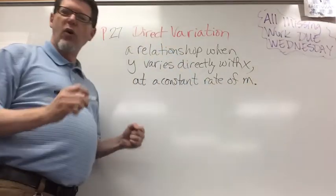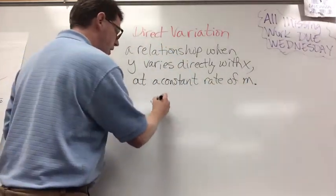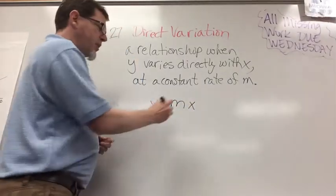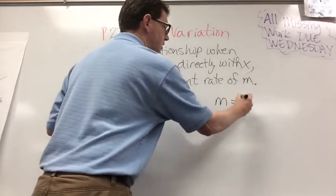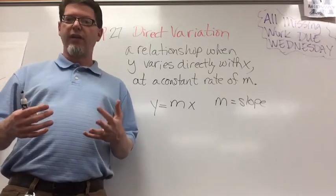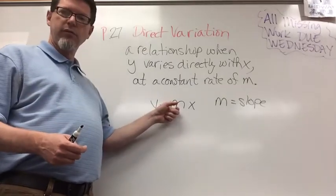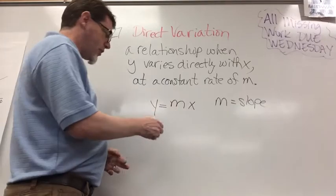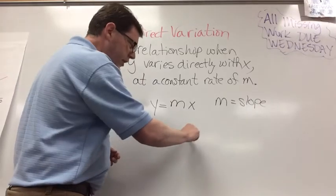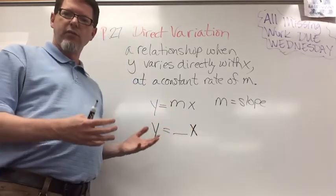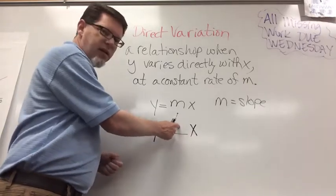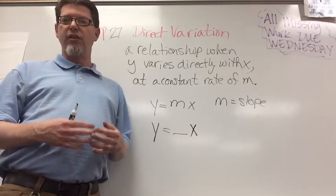That's a whole bunch of words to say that y equals m times x and we know that m is still our slope. So all we're really doing with direct variation is finding our slope and plugging it into an equation where it's always going to be y equals whatever m is times x. That's all. y equals m times x. We find the slope, we plug it in there, and that is what's called our direct variation equation.